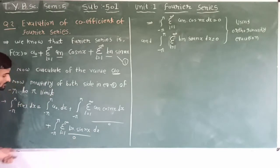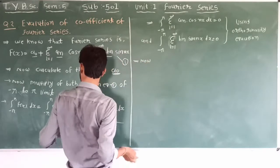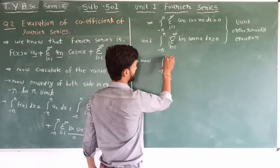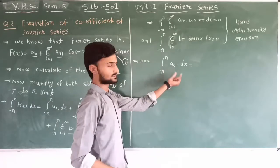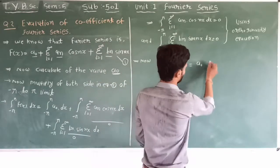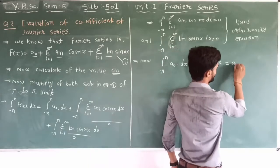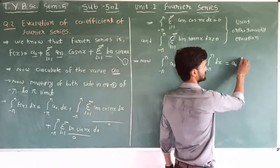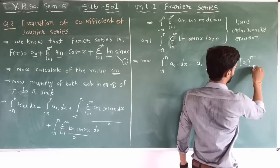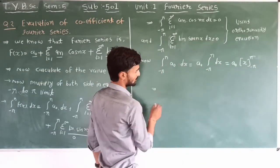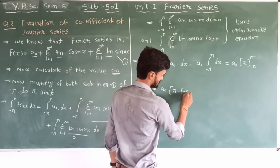So this term is zero and this term is zero. Now the integration of minus pi to pi of A0 into dx — since A0 is a constant, we put A0 outside: A0 times the integral from minus pi to pi of dx.